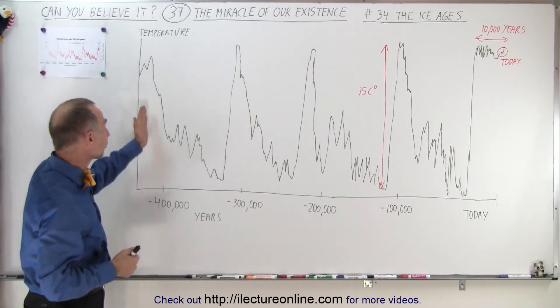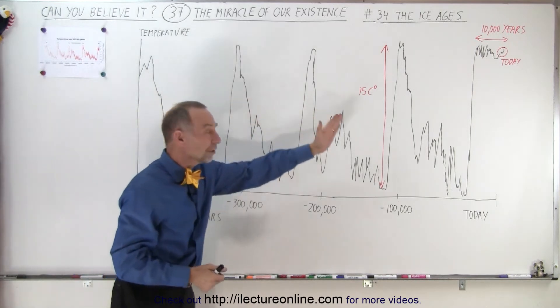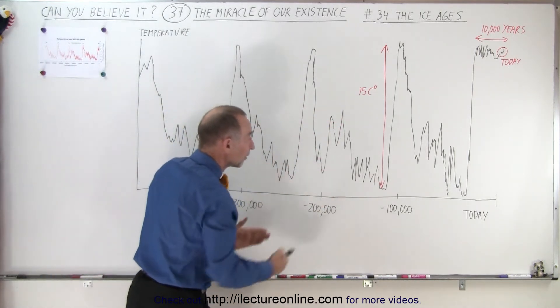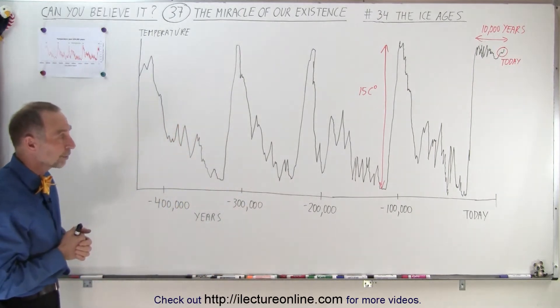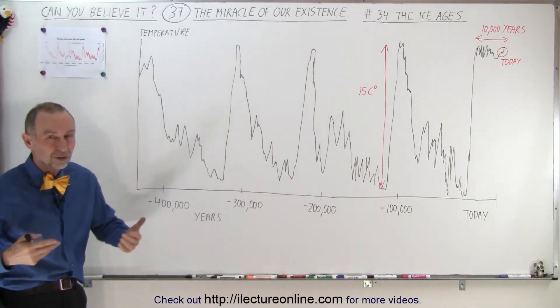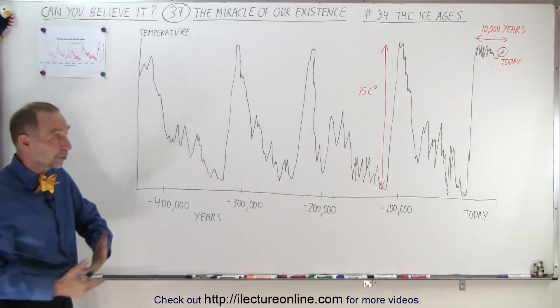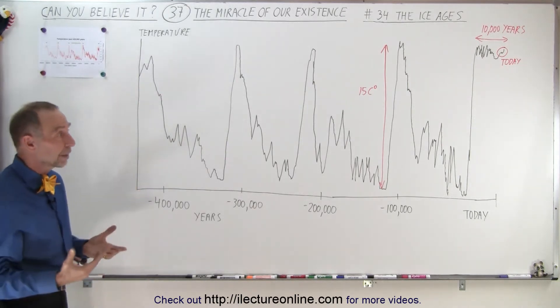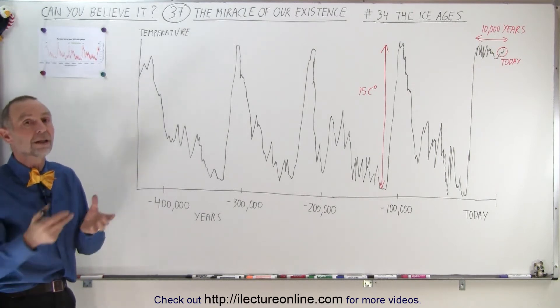Notice that these periods where it was warm are interspersed by about 100,000 year periods where it was very bitterly cold throughout the entire world. Well, relative to today. It wasn't quite as cold at the equator compared to the northern and southern regions, but in comparison it was much, much colder than it is today.